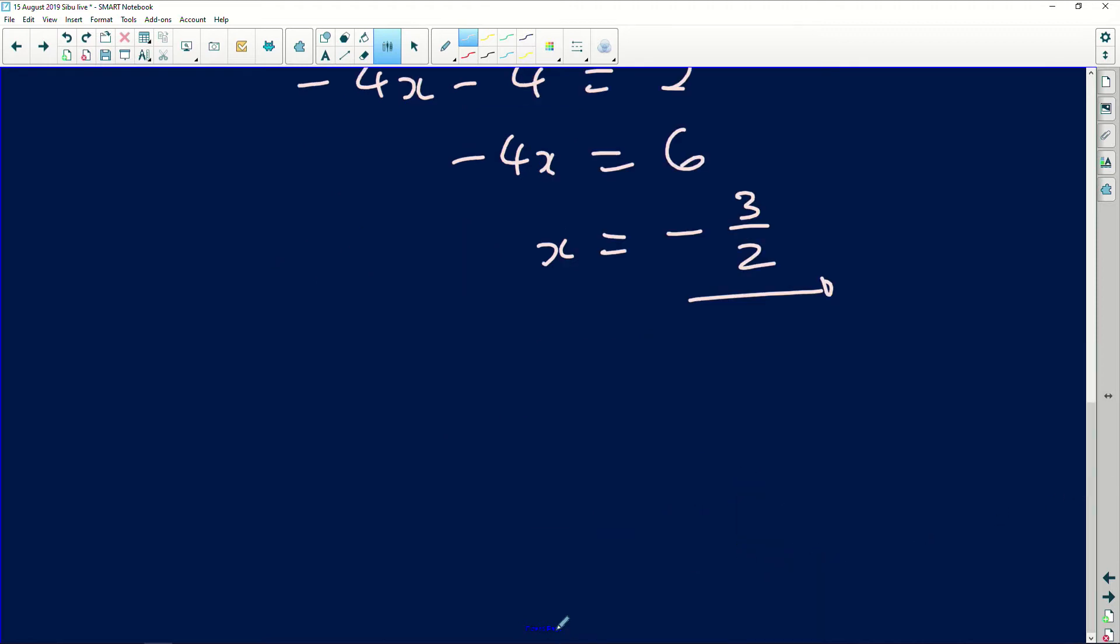That is the x value. But this is not the x-intercept. So the coordinate, you have to put it in point form. Therefore, the x-intercept is (-3/2, 0). And that is the solution of what we're looking for in that question.